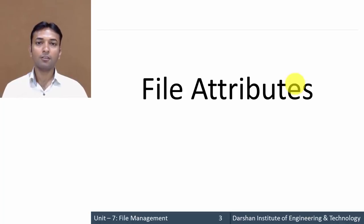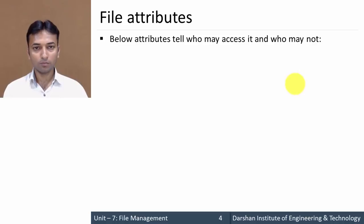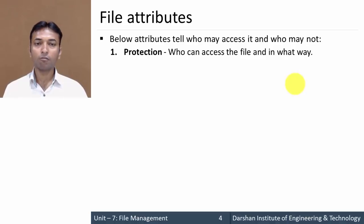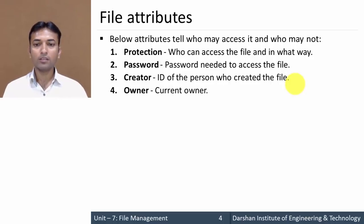Moving on to file attributes — the first category of attributes tells who may access the file and who may not. The first attribute is protection, which tells which user can access the file and in what way or for what purpose. The second attribute is password, that is the password required to access the file. The third one is creator, that is the ID of the person who created the file.